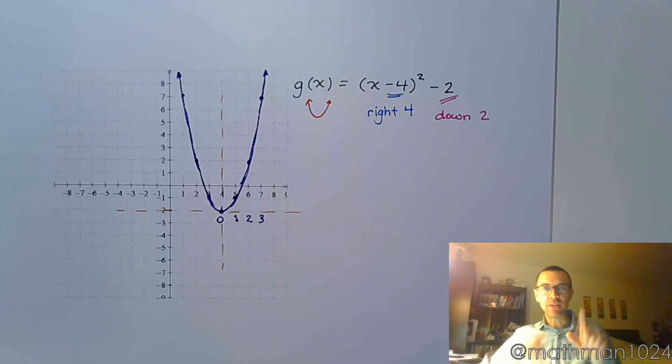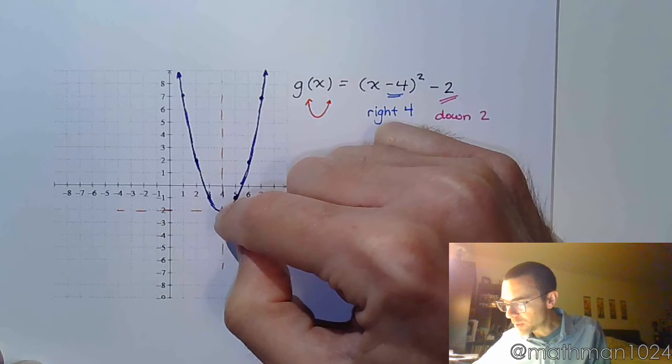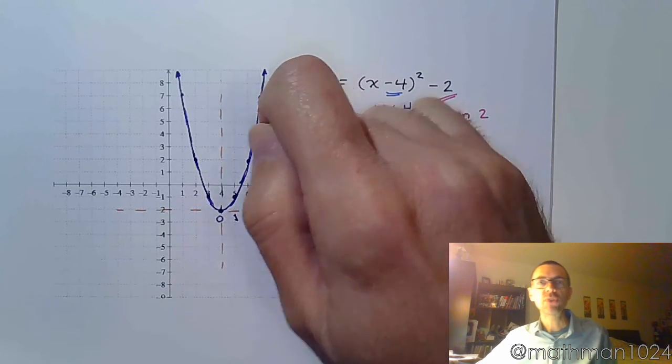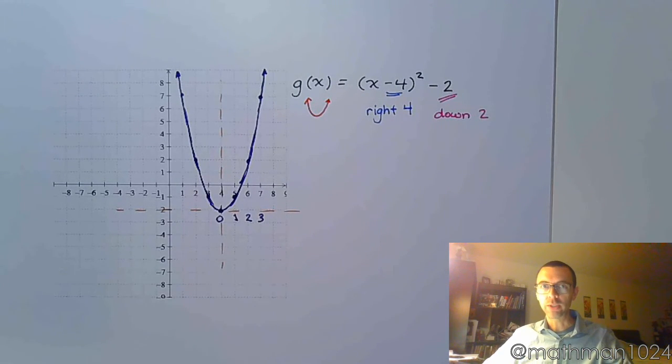Also, note that parabolas never go vertical. So, if you draw a parabola that's on the ends and just goes straight up and down, you're being lazy, you're being careless, and that kind of stuff doesn't fly. So, draw carefully, plot as many points as will fit on your graphing grid, and draw a nice, smooth curve through all of them.